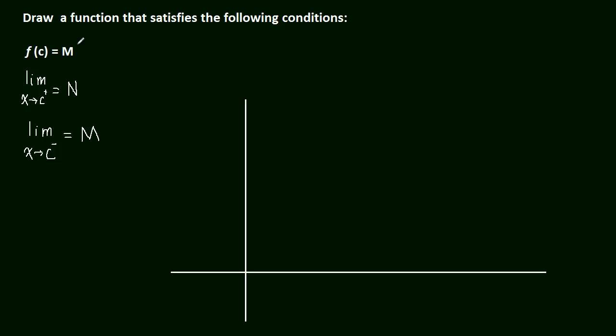We have f(c) = M. So let's pick a point to be c. Let's call this c. We know the height at c for the function is M, so let's pick a point up here. It doesn't matter where it is or what height we choose, as long as we satisfy these conditions. There's our point, and we know that has a height of M because when we plug in c to our function we get M out.